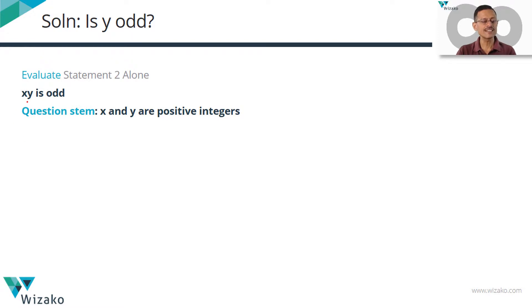Let's quickly look at statement 2. Statement 2 tells us that x into y, the product of these two numbers, is odd. This information comes from the question stem that x and y are positive integers. Their product is odd.